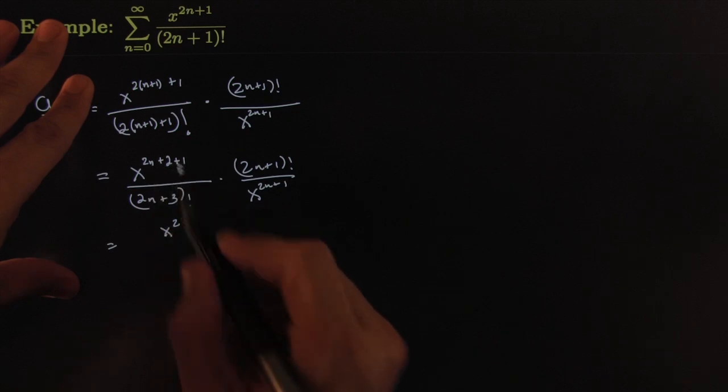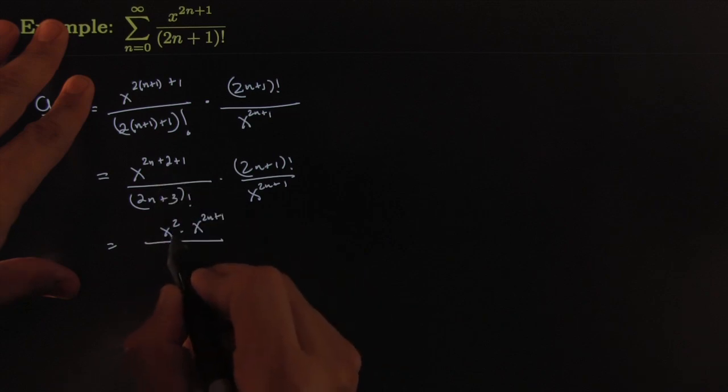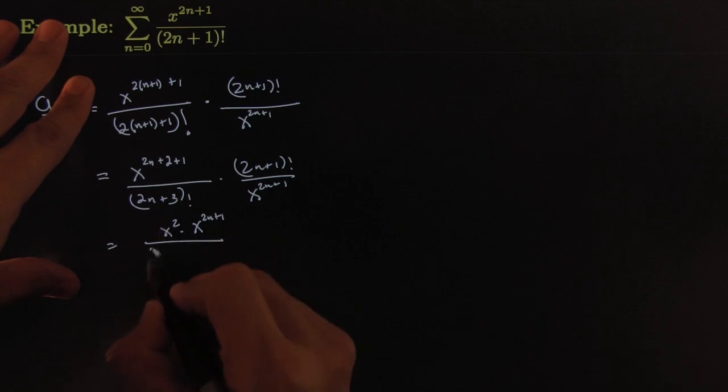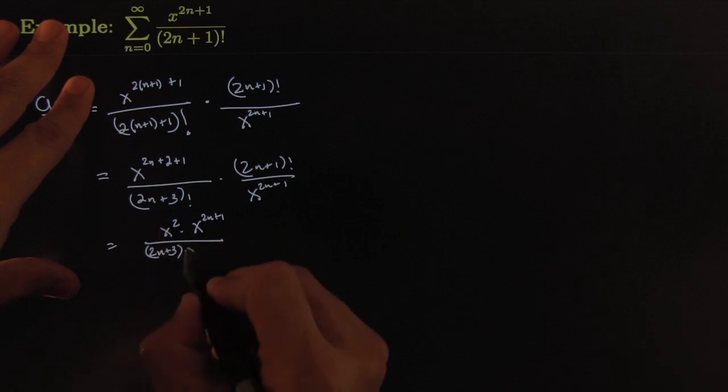Cleaning it up, I think I can factor out that x squared out of there. Out of the bottom I can—that leaves x to the 2n plus 1 because if I multiply I would be adding the exponents, which would give me that. Here I get 2n plus 3 times the next one 2n plus 2 times the next one 2n plus 1 factorial.